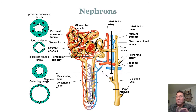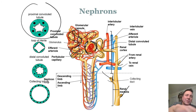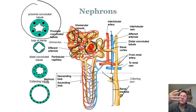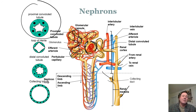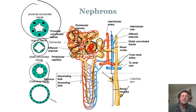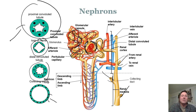Looking at histology again: the proximal tube has big, thick cuboidal cells with lots of microvilli for surface area — most reabsorption of fluid happens there. The loop is very thin. The collecting duct, which comes down at the end, has the ability to reclaim water but that's about it. That proximal convoluted tube is where mostly the action takes place.